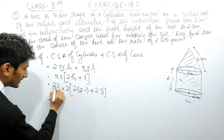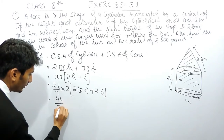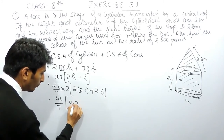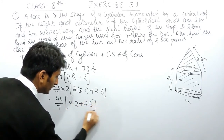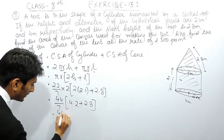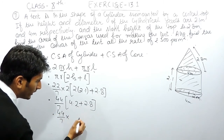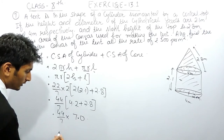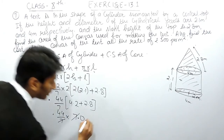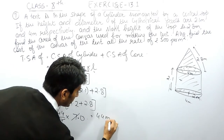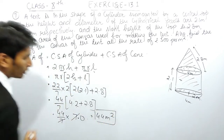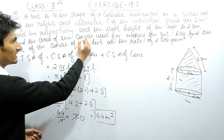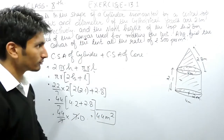Solving further: (44/7) × (4.2 + 2.8) = (44/7) × 7. The 7s cancel out, giving a total surface area of 44 meter square. So 44 m² of canvas is needed to make this tent.